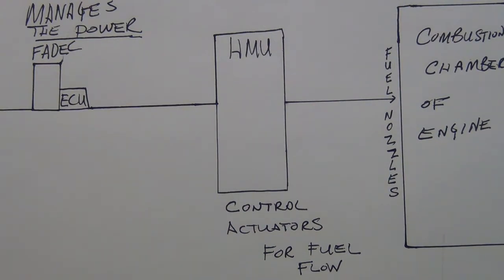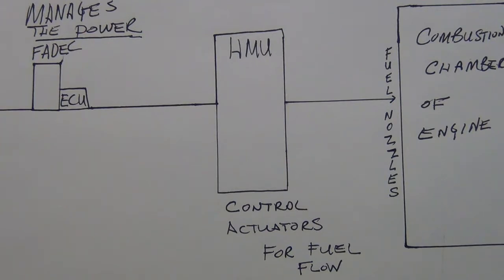The Dash 5A is the first variant, and the Dash 5B is the second. With each subsequent letter, they've improved the design. The Dash 5A has a burner staging valve, but when they got to the Dash 5B, they did away with it. Also, the fuel nozzle platform on the Dash 5A is split into two manifolds — 10 fuel nozzles on each manifold. The Dash 5B only has one manifold.